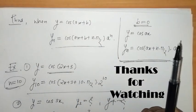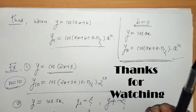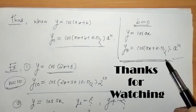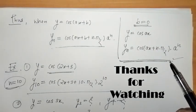In this way we have found the nth derivative of y = cos(ax + b), where a and b are constants. That is it for now. See you in the next video. Thank you. Keep watching.